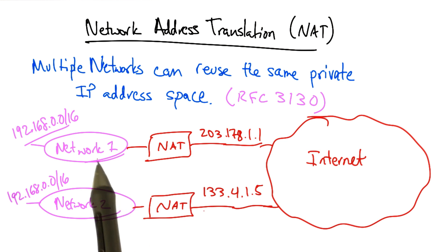Now to the rest of the internet, network 1 appears to be reachable by a single IP address, 203.178.1.1, and network 2 is reachable via a single distinct global IP address, 133.4.1.5.